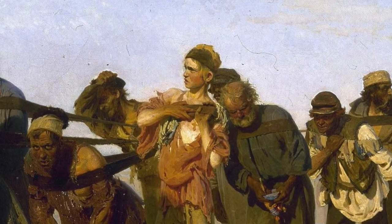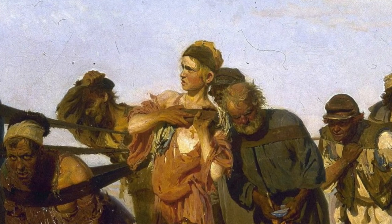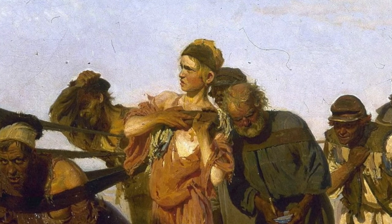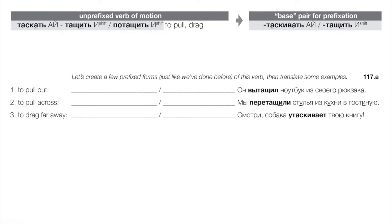Our first verb today is тащить — to pull or drag. The unprefixed forms work exactly like, for example, идти/ходить in terms of how we choose between them. The only difference is the type of motion: pulling/dragging. So таскать means to drag around (indeterminate), тащить means to drag underway (determinate), and потащить means to set off dragging or to drag off.